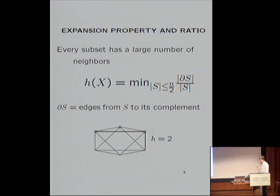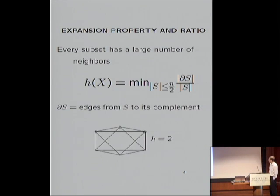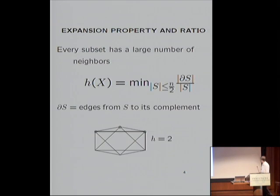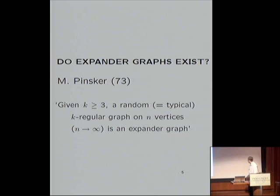So what it basically means is that sets have a large boundary. When talking about expanding families, we usually consider a sequence of graphs where the number of vertices becomes larger and larger. We want, over that sequence of graphs, this expansion ratio — this expanding factor — to stay bounded from below by a positive number over the whole family. If you have this phenomenon, then the family under consideration is called an expanding family.